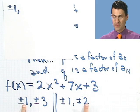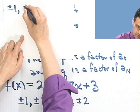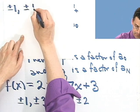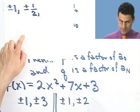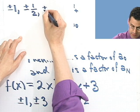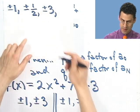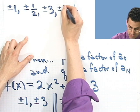Then I could have plus or minus 1 divided by plus or minus 2, which would be plus or minus a half. So there's another candidate. Then I could have plus or minus 3 divided by plus or minus 1, so that's just plus or minus 3. And then I could have plus or minus 3 divided by plus or minus 2, so that would be plus or minus 3 over 2.